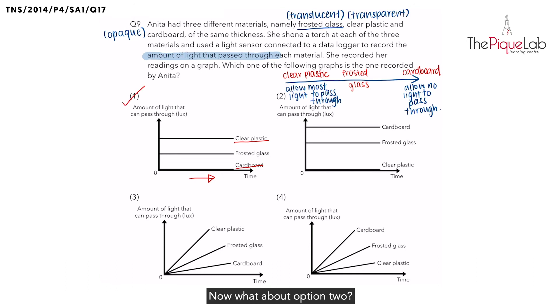Now what about option two? Option two says, as time passes, the clear plastic would not allow any light to pass through - zero light will pass through clear plastic. Is that true? No. The clear plastic should be the one that allows the most light to pass through. So number two would not be the correct answer.